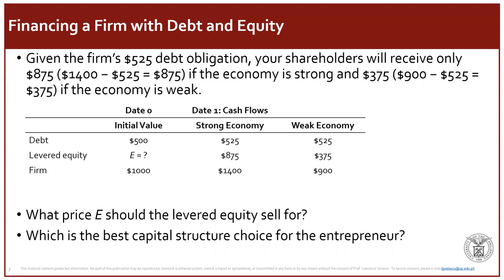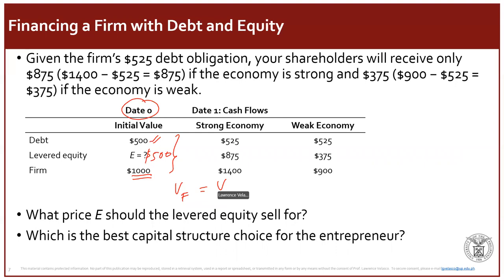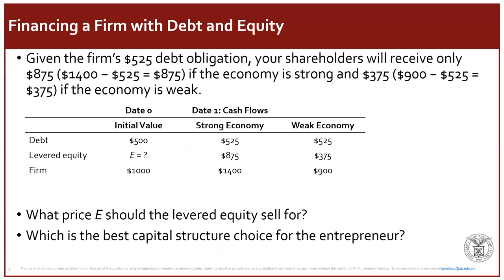If the value of the firm is still 1,000 and the value of debt today is 500, then the value of equity is also 500. This keeps the relationship: value of firm equals value of debt plus value of equity = 500 + 500 = 1,000. This is in keeping with the Modigliani and Miller propositions. Because cash flows of levered equity are smaller (875 vs. 1,400 in strong; 375 vs. 900 in weak), levered equity sells for a lower price — but you can still raise 1,000 in total funding.